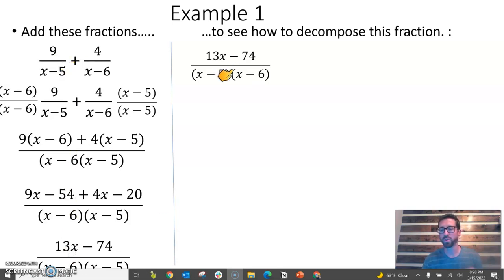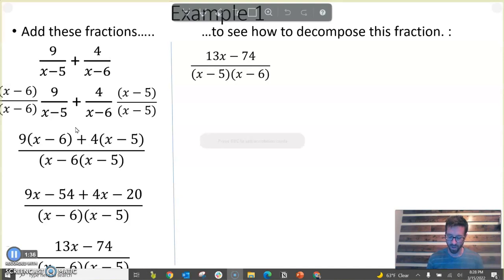Now, what we do when we do a partial fraction decomposition is we're going to start here and try to work backwards through this process and end up here. So what we're going to do is start with this problem. I know that whenever I break this up into two separate fractions, it's going to be some number over x minus 5 plus some unknown number over x minus 6.